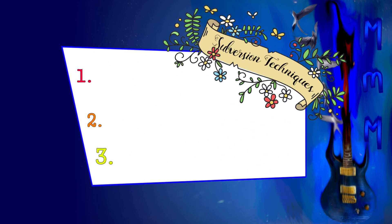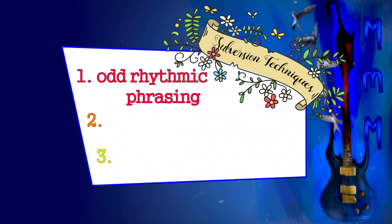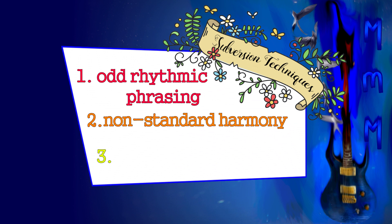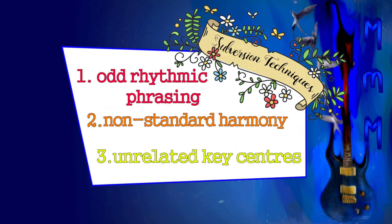There are three techniques Toto uses to subvert our expectations in Africa. The first is the use of odd rhythmic phrases, the second is utilizing non-standard harmony, and the third is the modulation between two unrelated key centers. Let's take a look at these one by one.